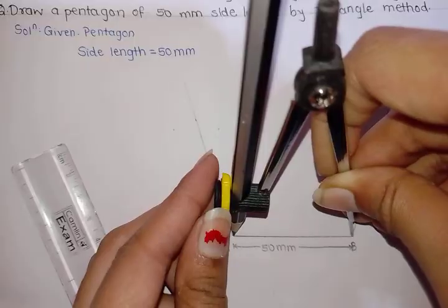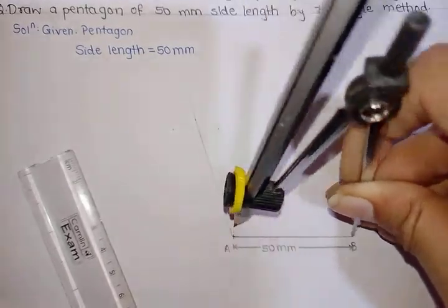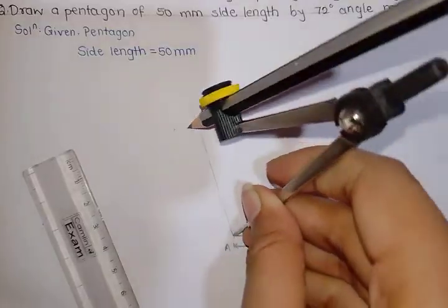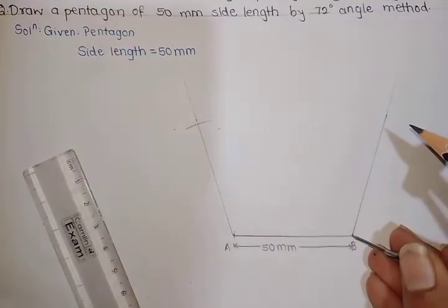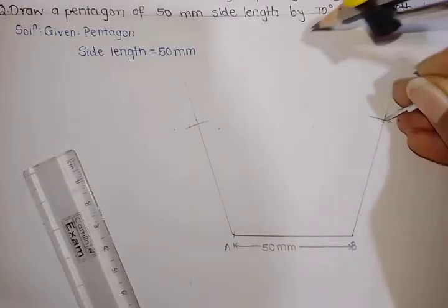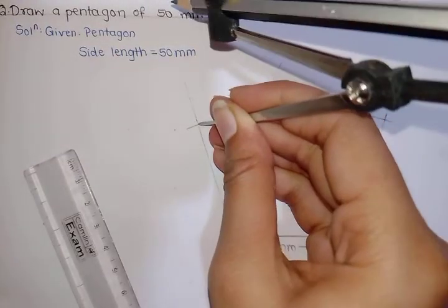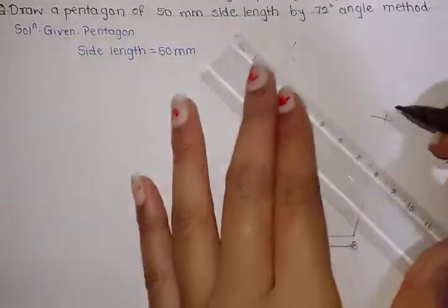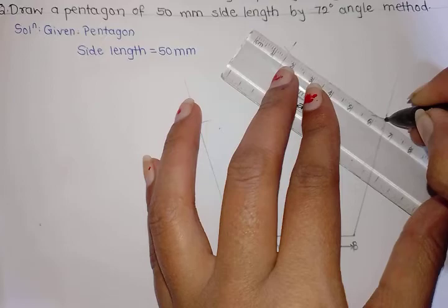in the compass and mark arcs on the lines we have drawn. After that, with the same distance, mark two arcs, and we will join the points.